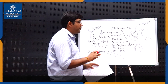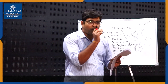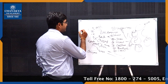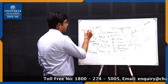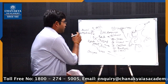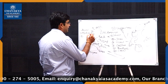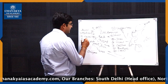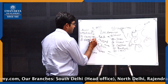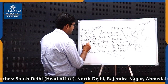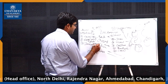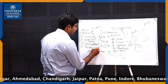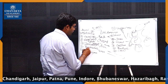Now comes the question on poisoning in forensics. For all poisoning questions there is a simple format: first, the mechanism of action; second, the fatal dose; third, the fatal period; fourth, clinical features; fifth, post-mortem findings; and sixth, the medico-legal aspect of that poisoning.